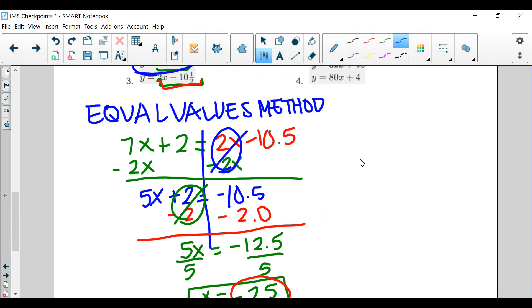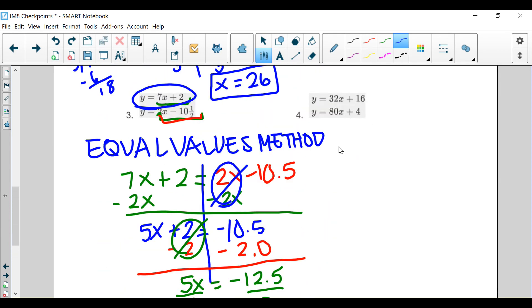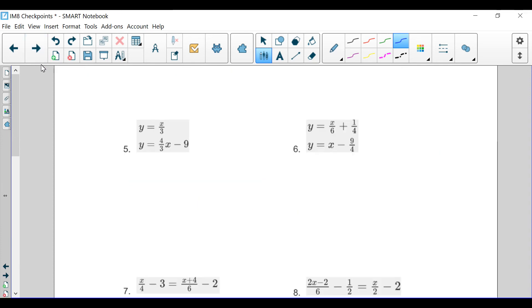You're going to need to do that same thing for this one. So, equal values method is what you're going to use. You're going to set it up where we have the 32x plus 16, going to be equal to the 80x plus 4. Then, solve.